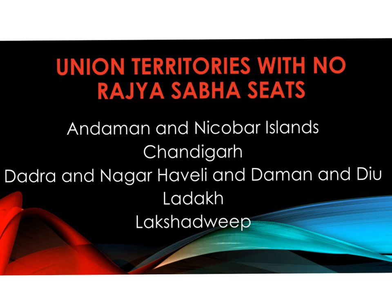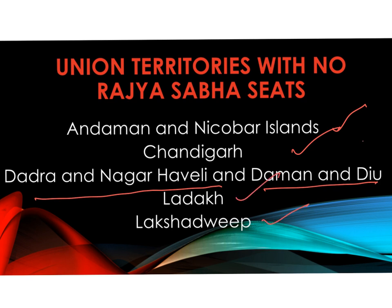The Union Territories that have no Rajya Sabha seats are Andaman and Nicobar Islands, Chandigarh, Dadra and Nagar Haveli and Daman and Diu, Ladakh, and Lakshadweep. These Union Territories have no representation in the Rajya Sabha because they do not have any legislative assemblies. Members of the Rajya Sabha are indirectly elected by the legislative assembly MLAs, so these Union Territories have no such representation.